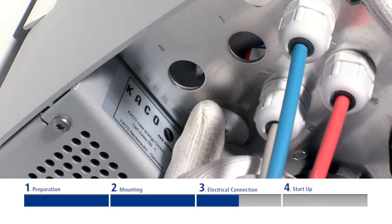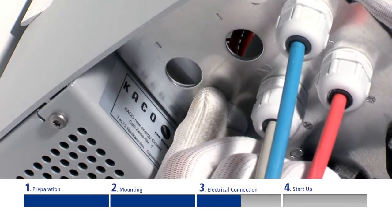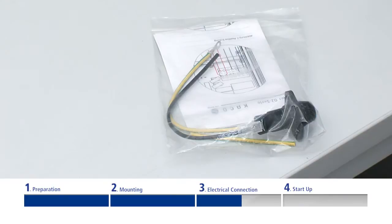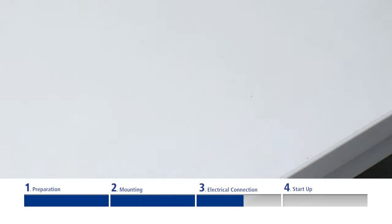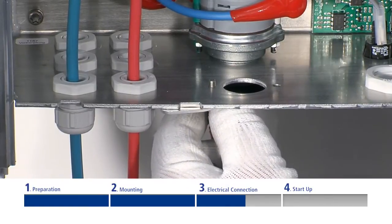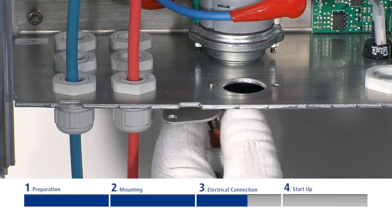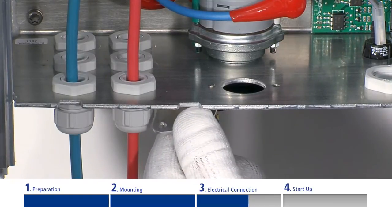Unused cable fittings must be closed off by using the protective caps which are included. Some module manufacturers, especially those of thin-film modules, stipulate earthing on the generator side. An optional earthing kit for use on galvanically isolated Powador inverters is available for this purpose.